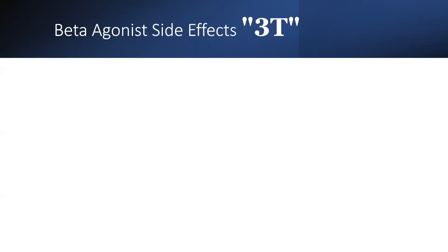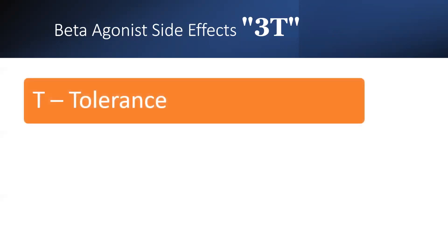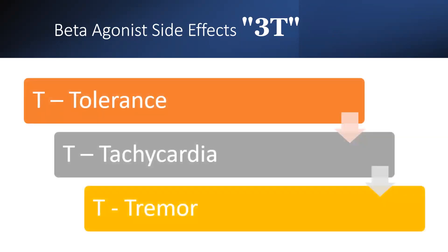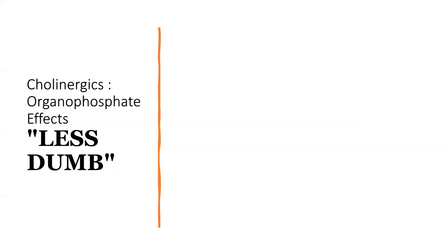For beta agonists, their side effects are remembered as 3T: T for tolerance, T for tachycardia, and T for tremor.